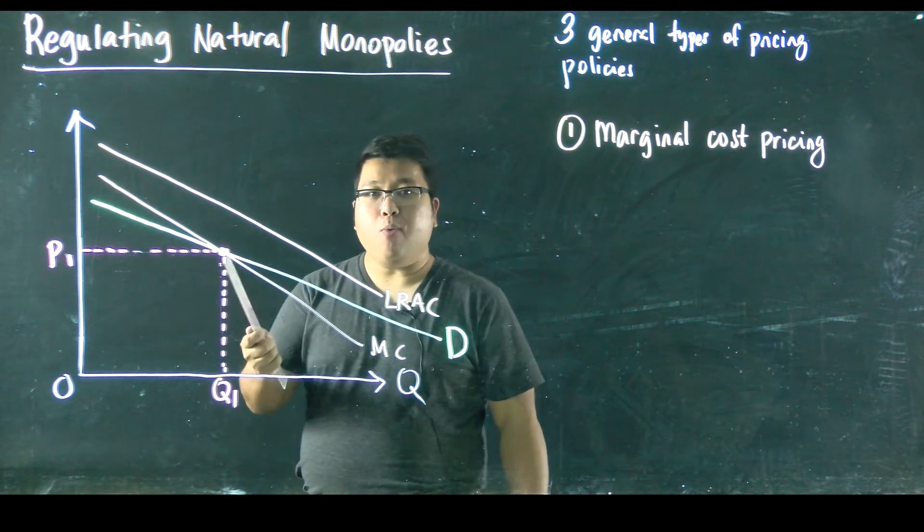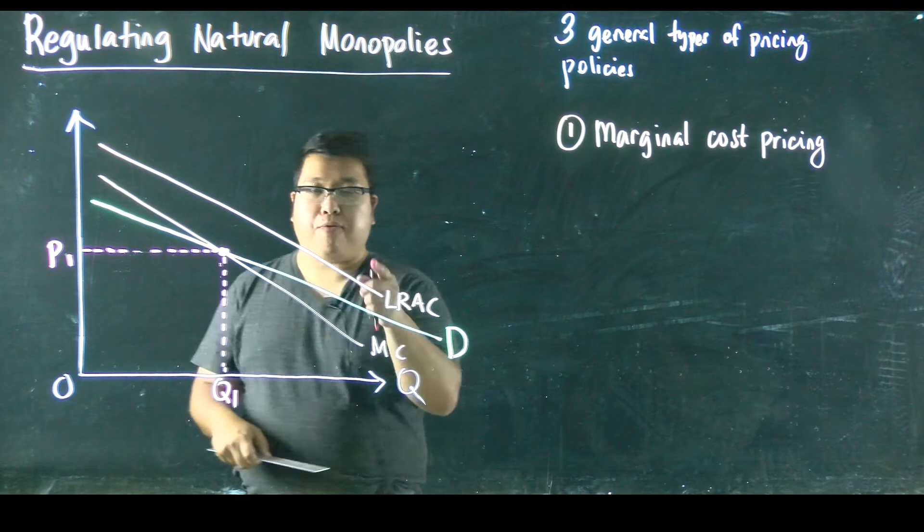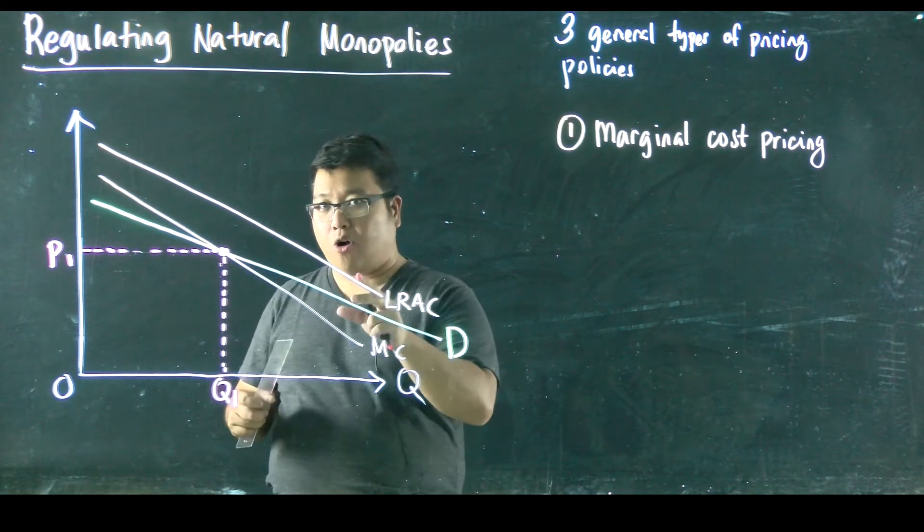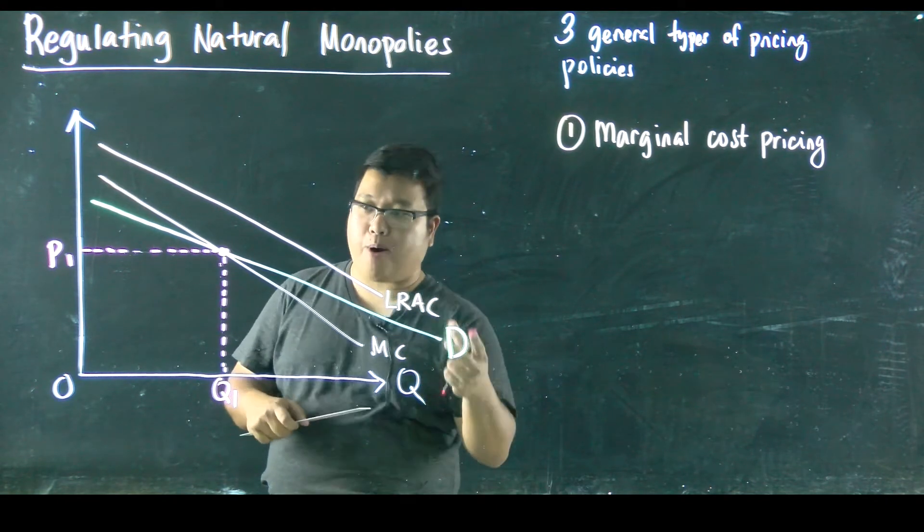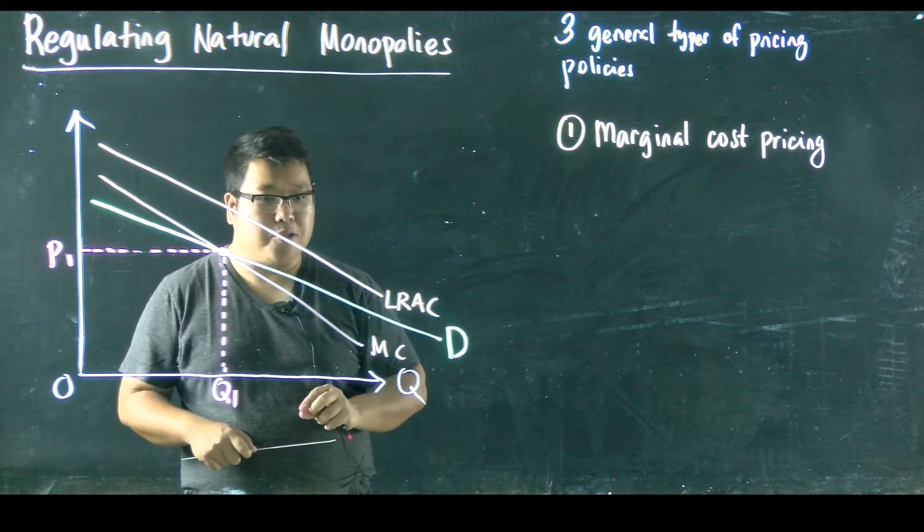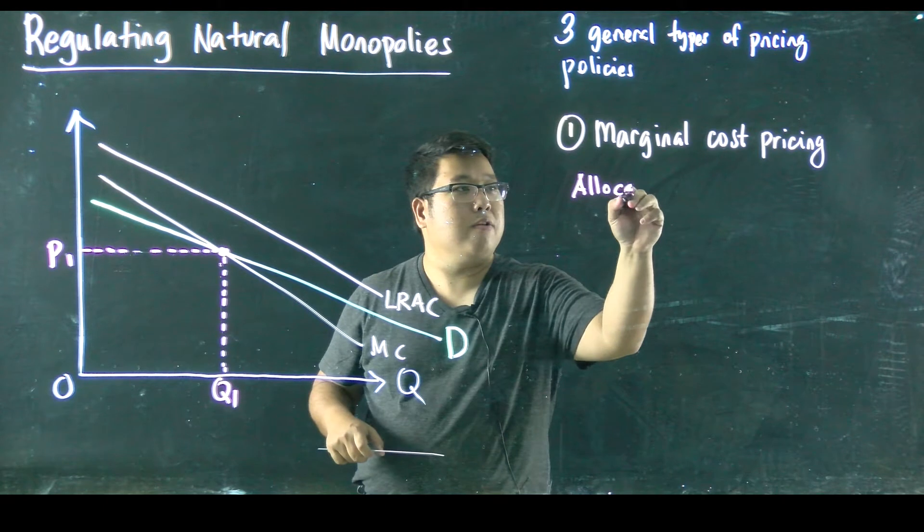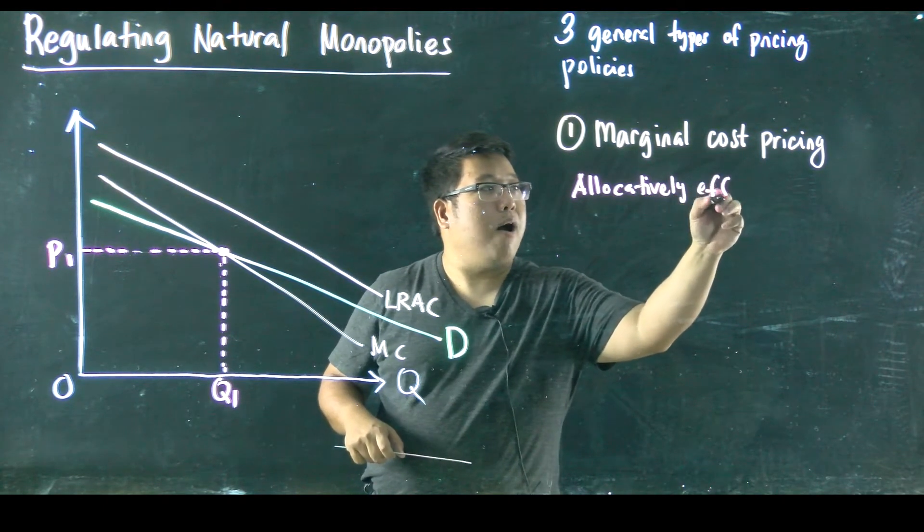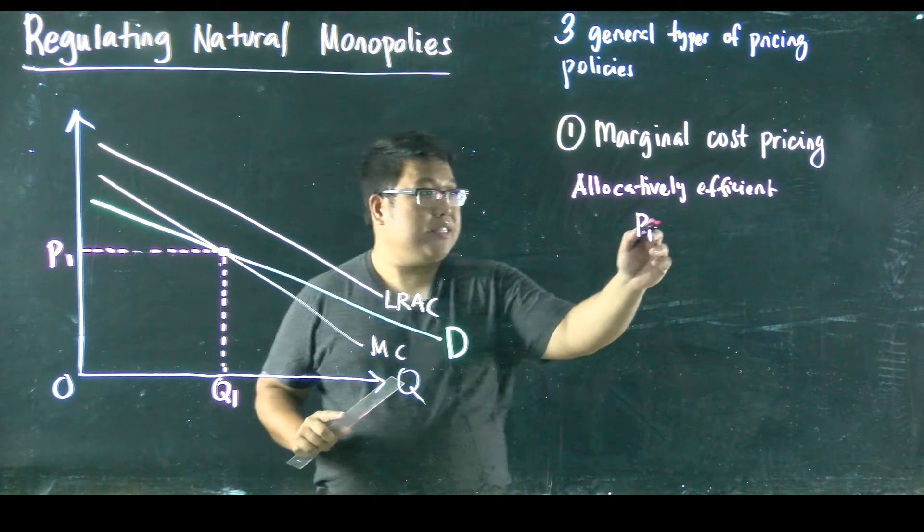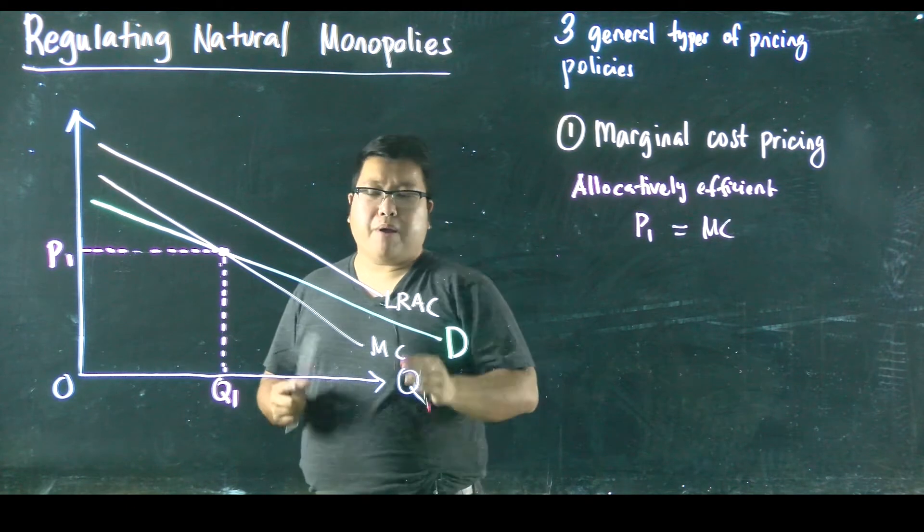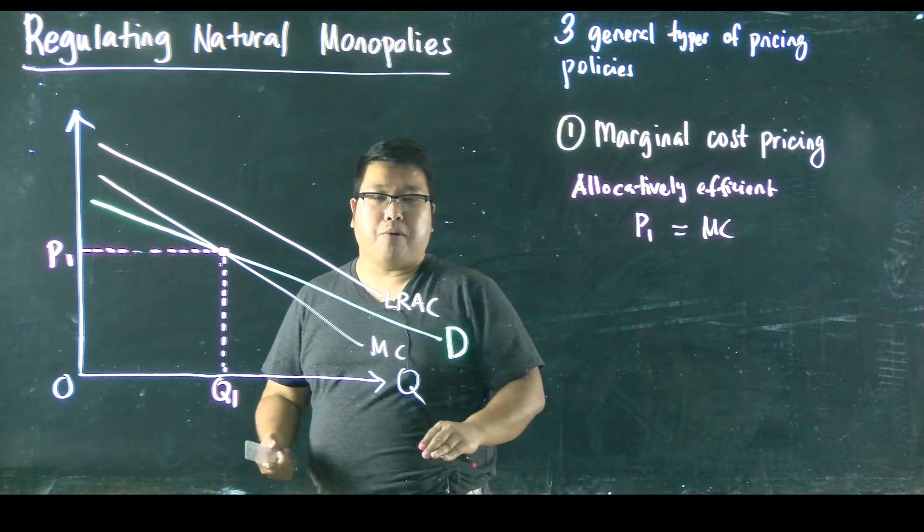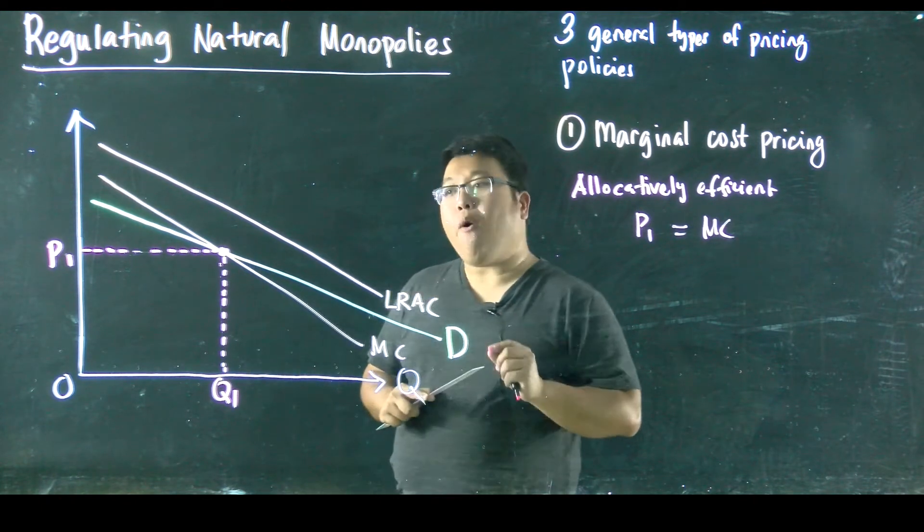Now, here's the story. Is P1 allocatively efficient? Remember from the previous video, we learned that allocative efficiency requires that marginal cost equal to the marginal value or the price. In this case, marginal cost pricing is allocatively efficient. Why? Because the price that's set, which is P1, is equal to marginal cost. But my question is this. Although it's allocatively efficient, is it good for the natural monopolist? Well, the answer is no, unfortunately. Why is that?